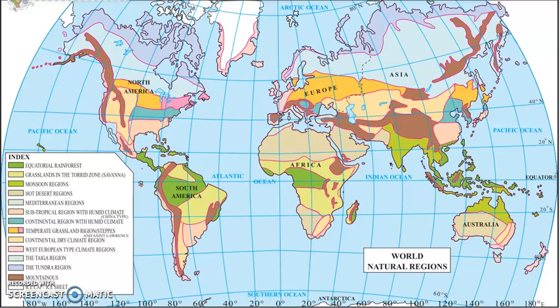This video is based on lesson number four, climatic regions. A climatic region is basically a division of climates on the basis of high and low temperatures. Climate cannot be specified by a single day; you need to work on observations for many years before you can conclude what type of climate a region has.